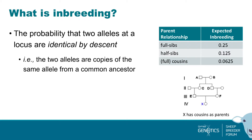A more technical definition to quantify the amount of inbreeding: the probability that two alleles at a locus are identical by descent. Starting at a position in the genome, you can work out the probability that the same allele comes down through each line and ends up in the same individual. We can use pedigree information to calculate those probabilities. For example, if parents are full sibs, the offspring's inbreeding is 0.25; half sibs, it's 0.125; and cousins, it's half that again.